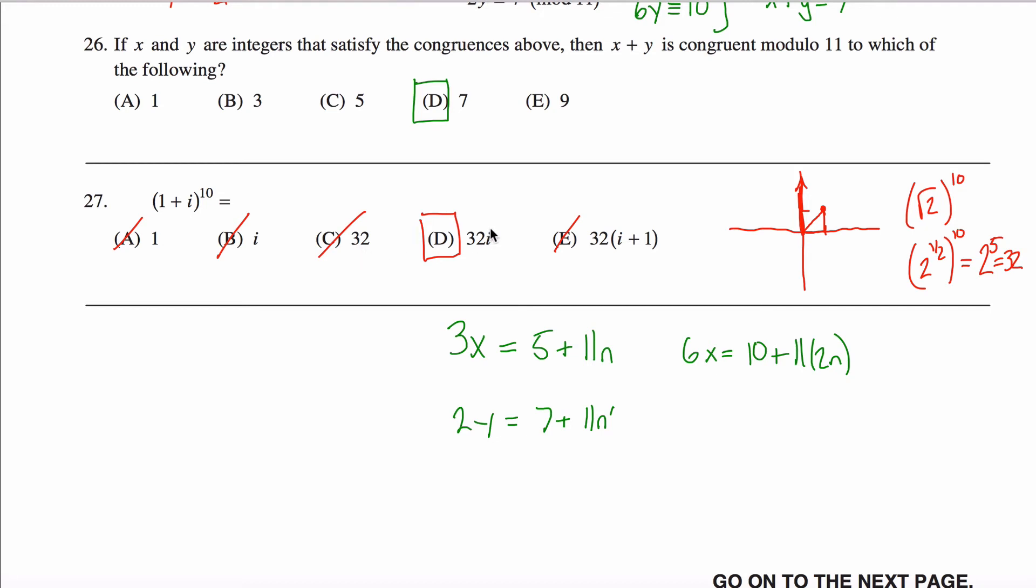You can also get there just by kind of looking for a pattern, so you can multiply these guys all out. 1 plus i to the first power is obviously just 1 plus i, 1 plus i squared is 1 plus 2i plus i squared, which is just 2i.